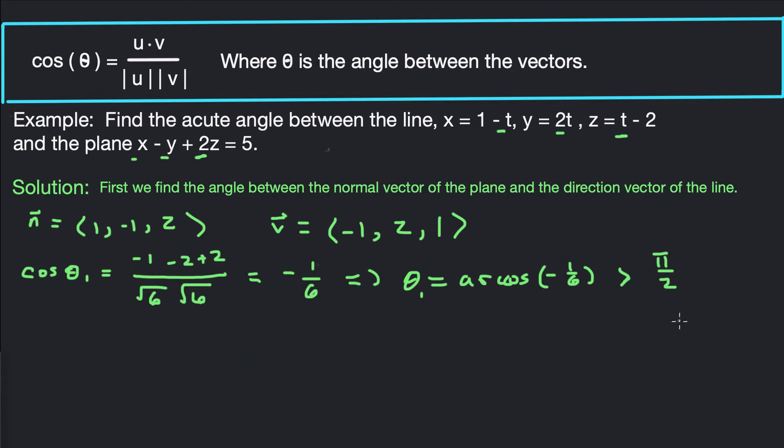So our angle that we want, θ. Theta is going to equal arccos(-1/6), which is the obtuse angle between the line and the normal vector, minus π/2. And that would be the angle between the line and the plane.